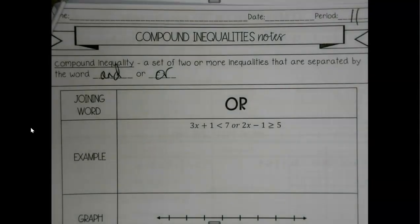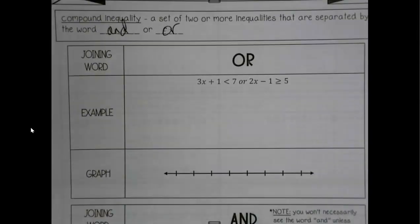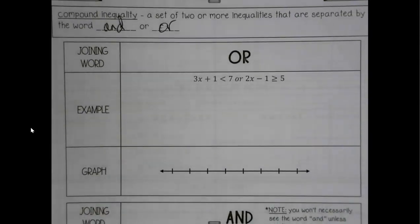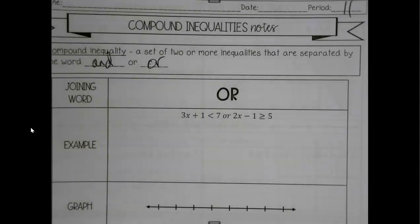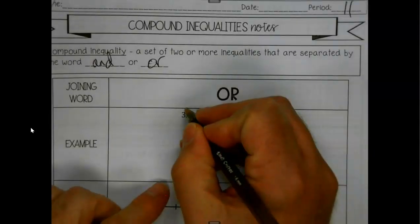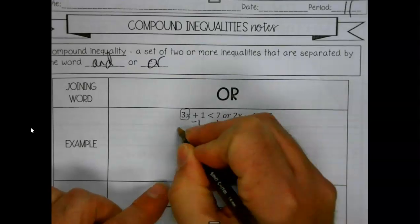Each of those inequalities is going to have its own special part. If you have the word 'or' in the middle, we'll see shortly what that means. We're going to solve each of these inequalities separately, as if they're their own problem, and do whatever we need to do to get x alone.